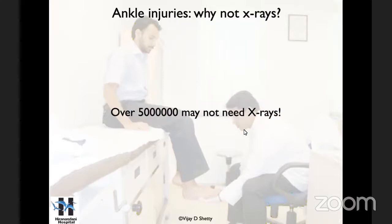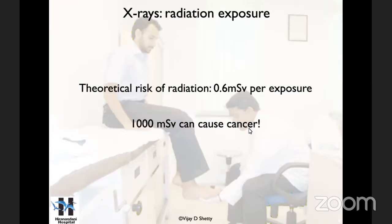In our population, about 70 lakh people get ankle injuries in India. 85% of 70 lakhs is about 50 lakh people who may not need X-rays, but we are doing X-rays on every patient. What are the repercussions? For a start, it is radiation exposure. Ankle injuries happen especially in very young people, and radiation exposure carries a theoretical risk — beyond 1000 millisieverts it can cause cancer.